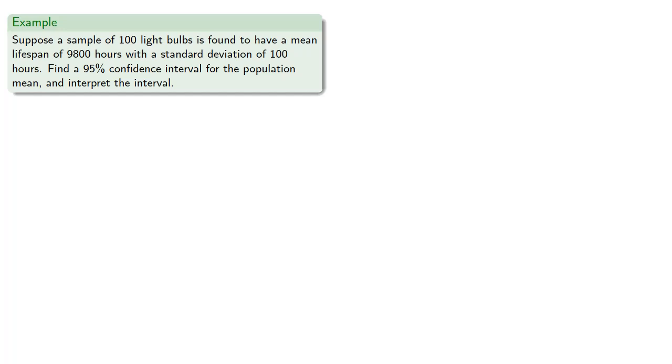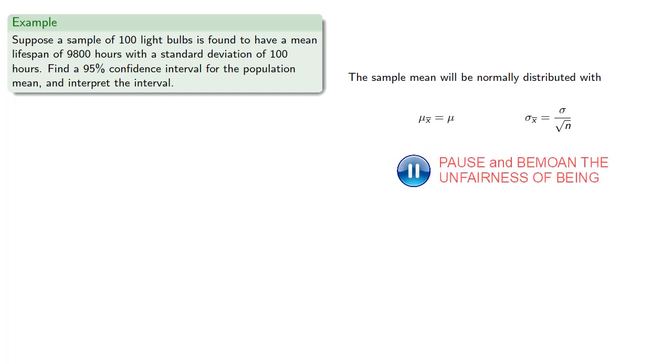The sample mean will be normally distributed, except we don't know the population mean or the population standard deviation. Actually, we don't use the population mean, so it doesn't matter that we don't know what it is.